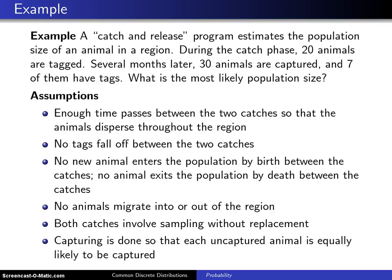Here's a problem from population biology. A catch and release program estimates the population size of a particular type of animal in a region. During the catch phase, 20 animals are tagged and then released. Several months later, 30 animals are captured, and of those 30, 7 of them have tags on them.